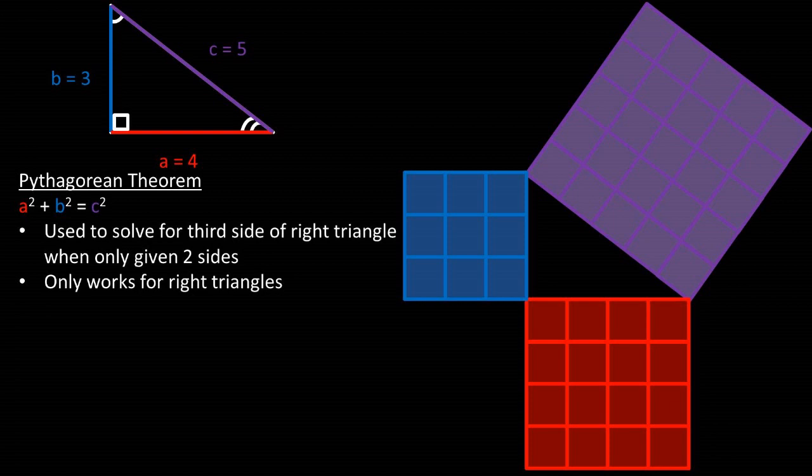At the top of the screen, we have a right triangle that has an a length of four, a b length of three, and a c length of five. Depicted at the right of the screen is what each side length squared looks like.